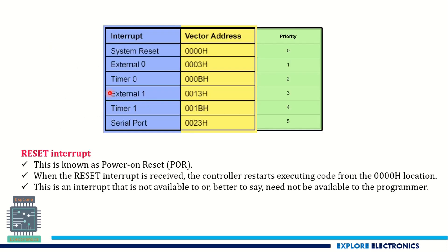As mentioned, the main program keeps executing, and when an interrupt occurs in between, the program counter will have the address of the current instruction being executed — that address will be pushed to the stack. Now the program counter should have the vector address of the interrupt that occurred. For example, if the external zero interrupt occurs, the vector address is specified as 003H.